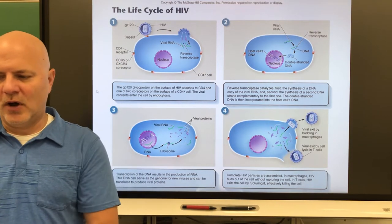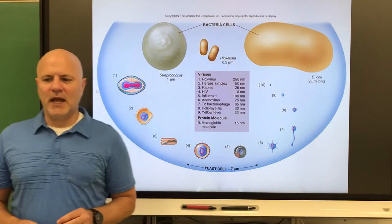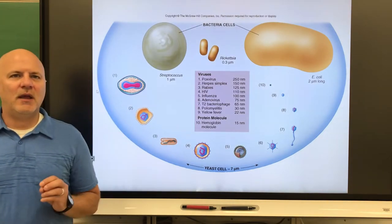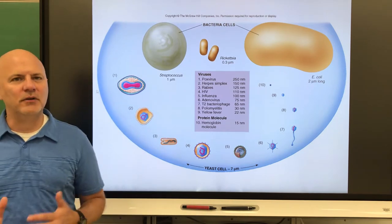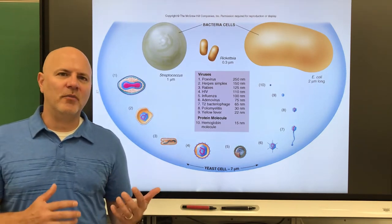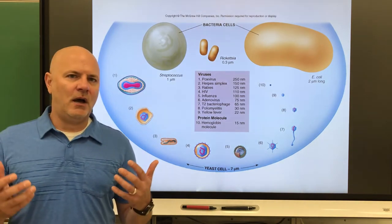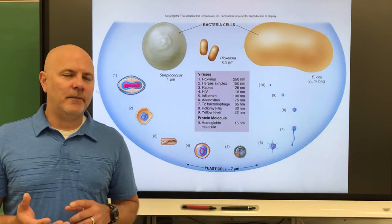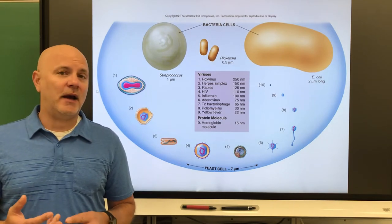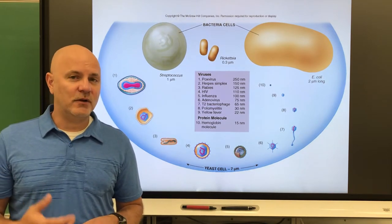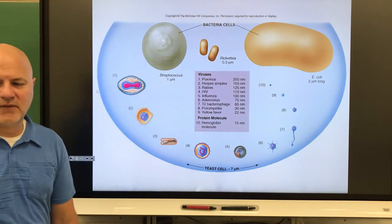Let's switch topics and move on to bacteria. Bacteria are literally everywhere and are prokaryotic cells — cells that lack a nucleus — as opposed to eukaryotic cells, which have a nucleus. Plants, animals, fungi, and protists are all eukaryotic. Protists are single-celled organisms that have a nucleus.